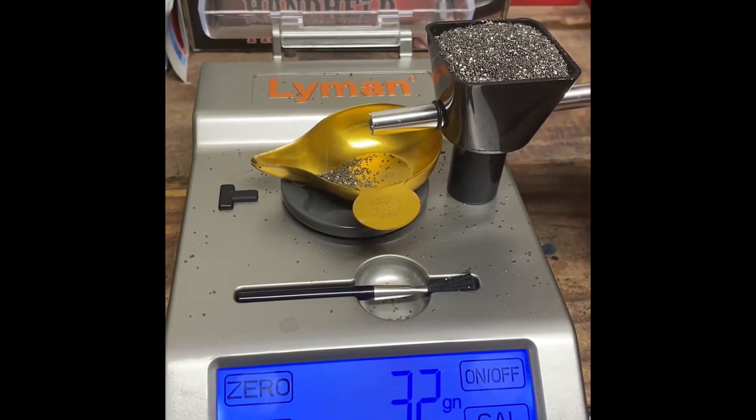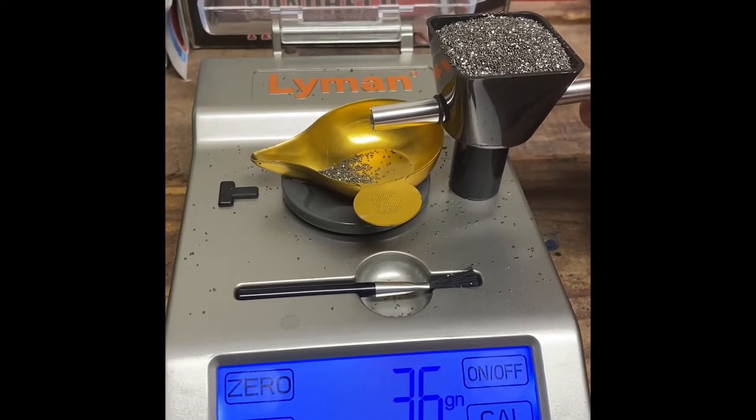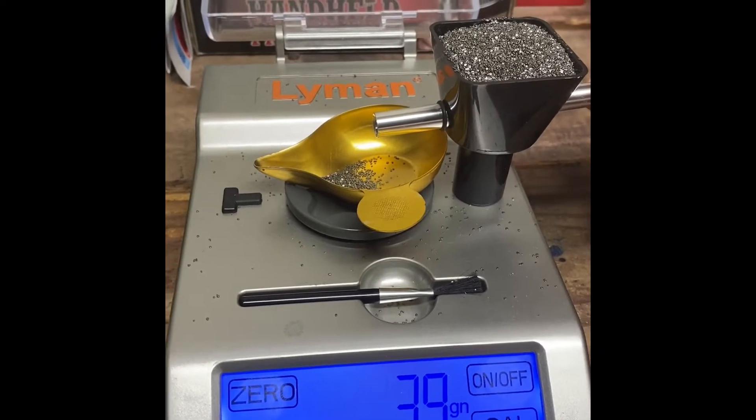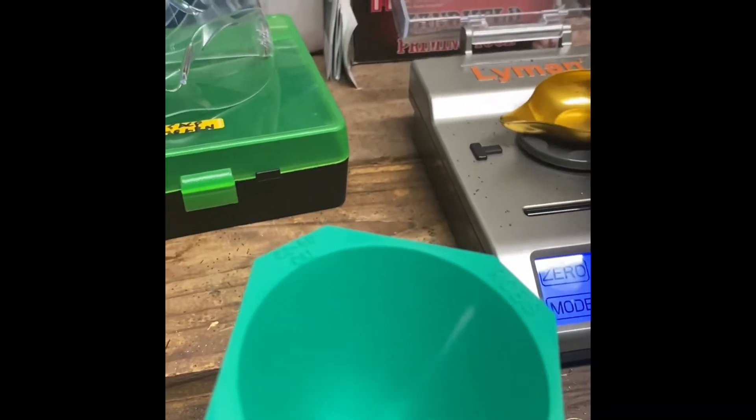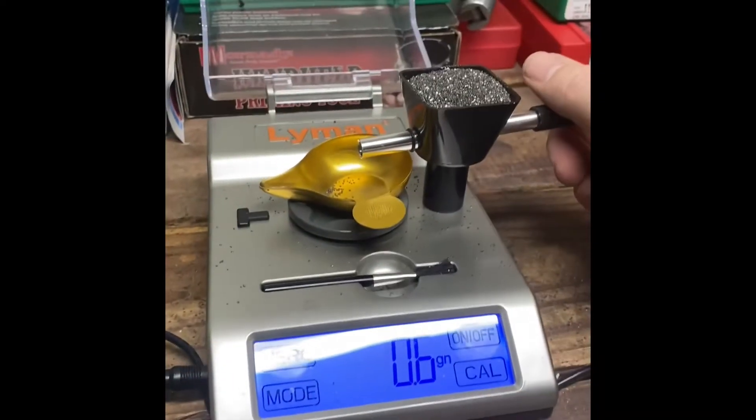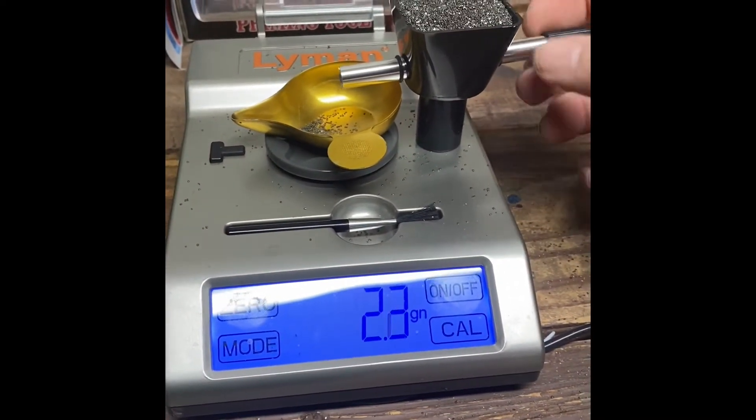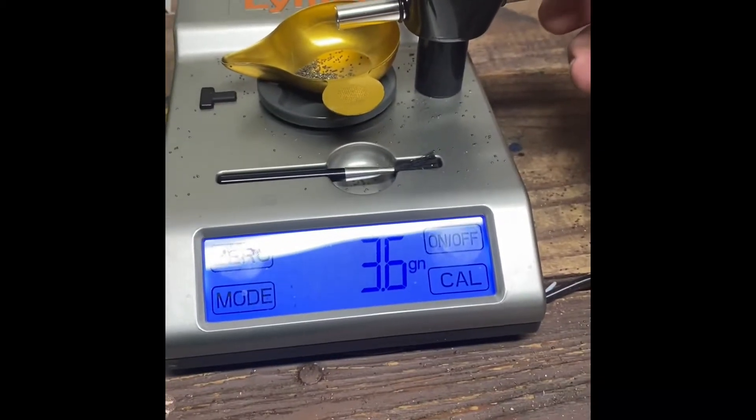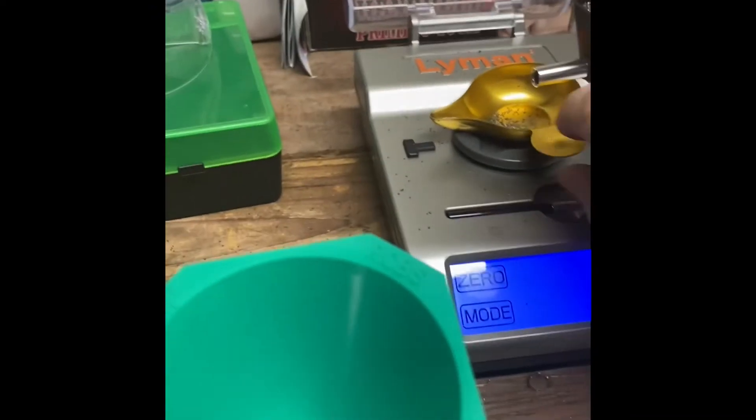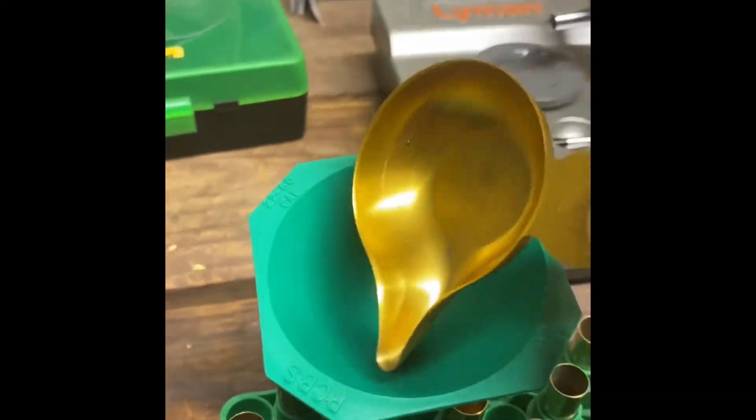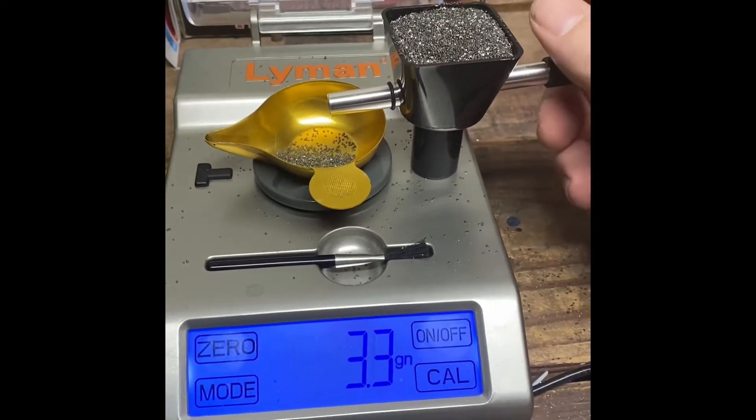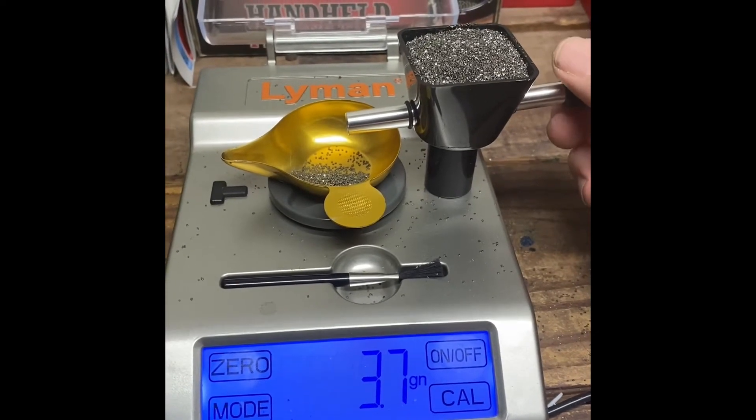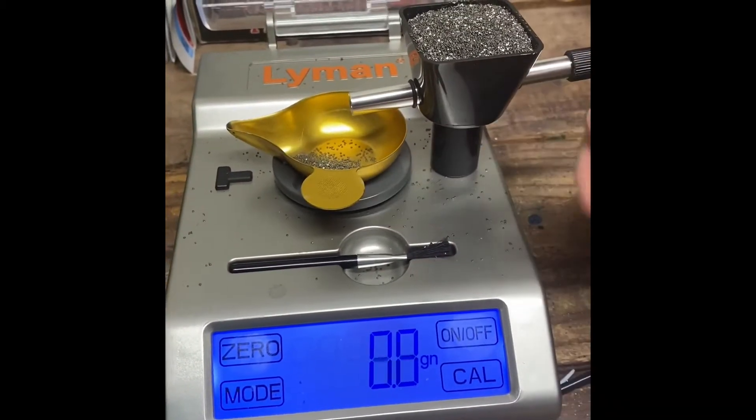We're just going to go to 3.8 grains. It really doesn't matter if you're a grain, you know, 0.1 over, it'll be just fine. Put one in there, we're back at zero. I'll do one more. Let me move my funnel over just so I don't mess it up. I'll try to get the glare off of that for you. Come over here, we can bump the scale, 3.8.